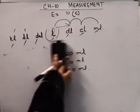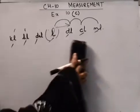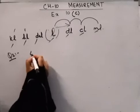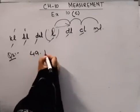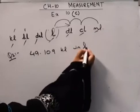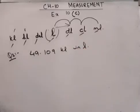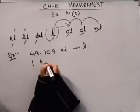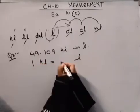Now we will do the second question. Express 49.109 kiloliters in liters. We have to change it into liters. How will we do this? First let's see the relationship. 1 kiloliter is equal to dash liters.